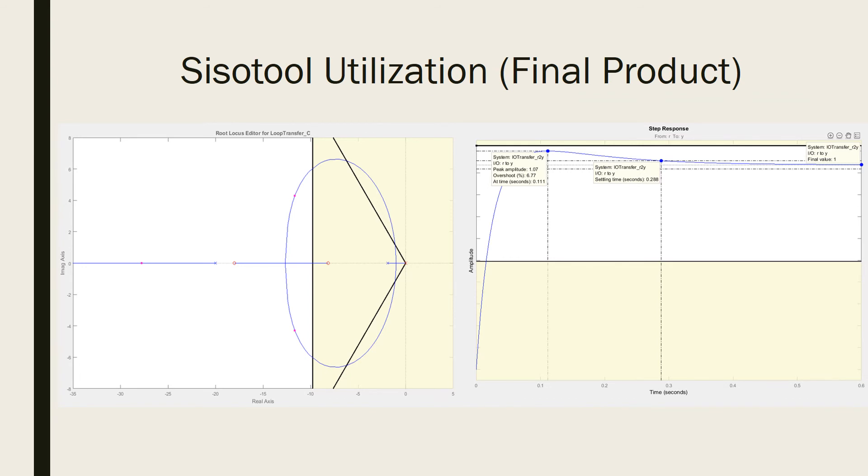Using the SISO tool to implement the PID controller and also alter the location of the poles, a step response was found that meets the criteria required. The final step response yields a percent overshoot of 6.77%, a settling time of 0.288 seconds, a rise time far less than 0.4 seconds, and a final value of 1.